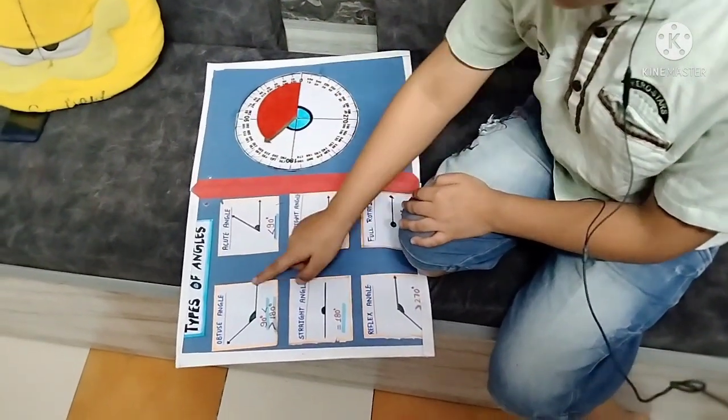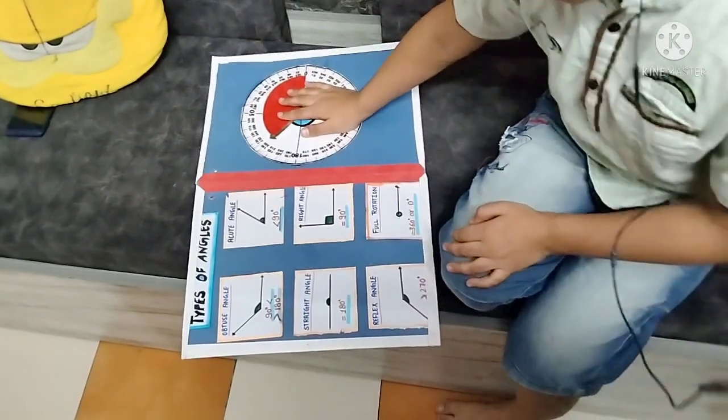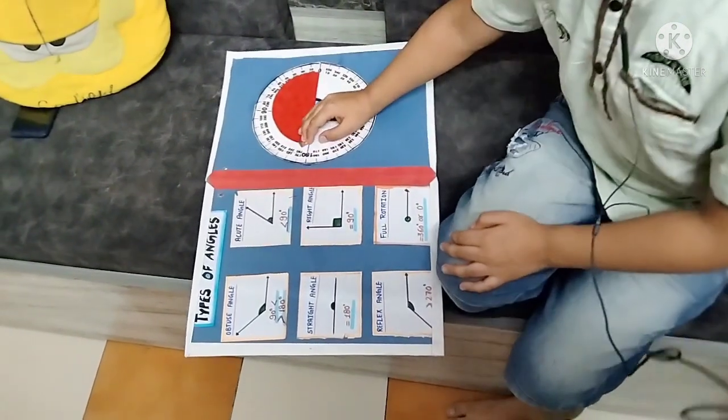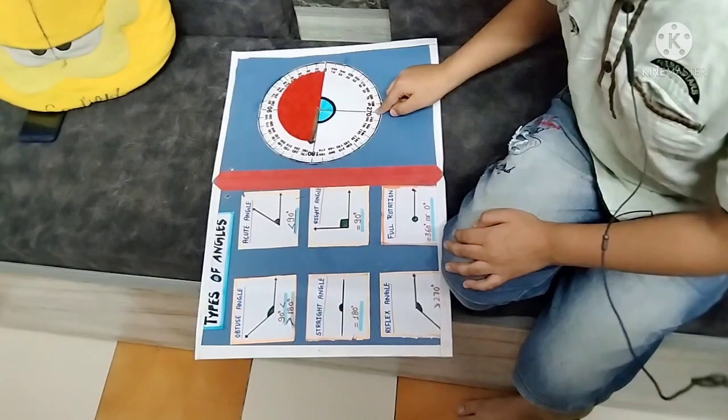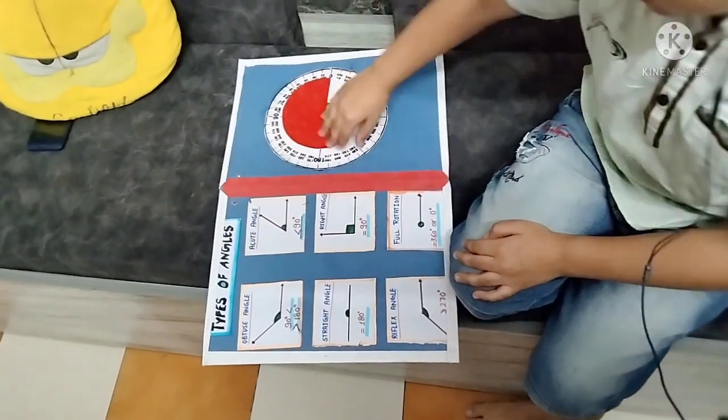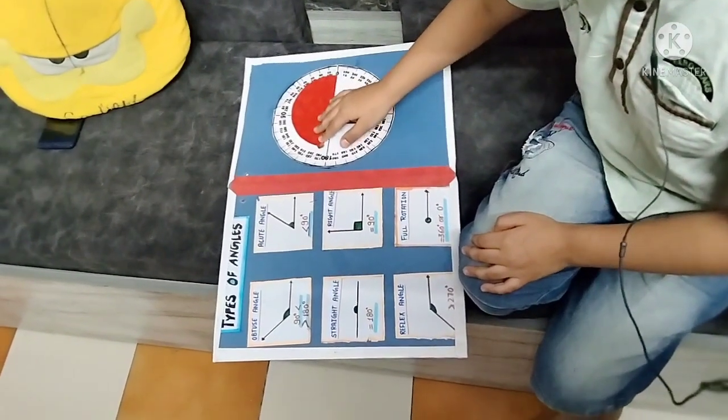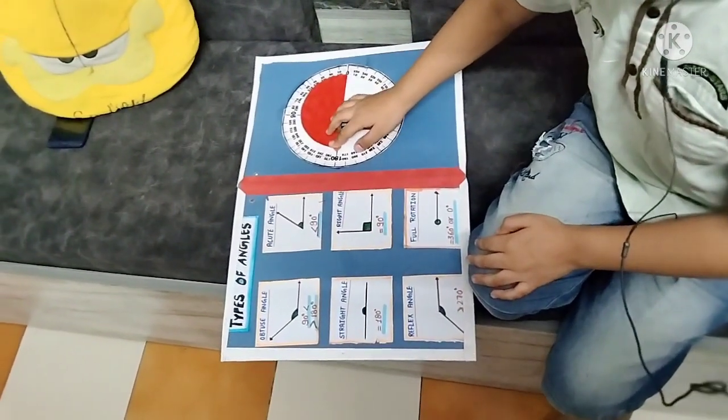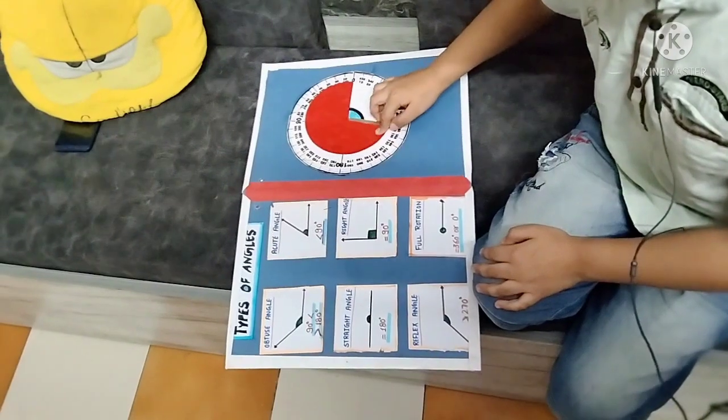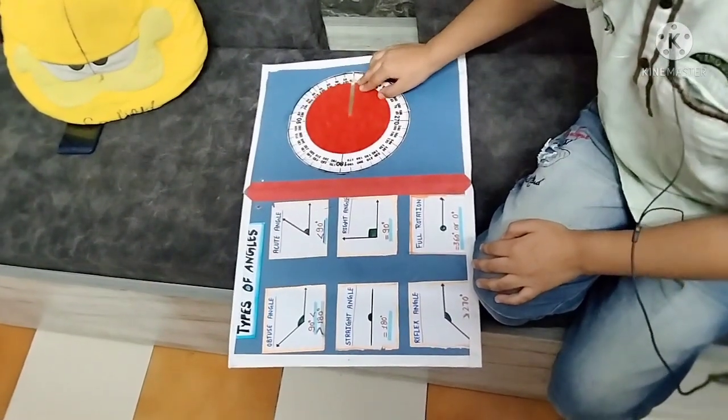An angle greater than 180 degrees and less than 270 degrees is called a reflex angle. An angle equal to 360 degrees or 0 degrees is called a full rotation.